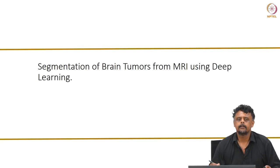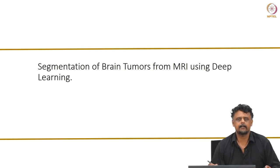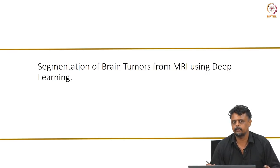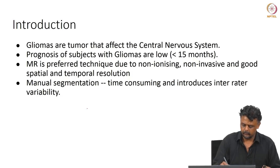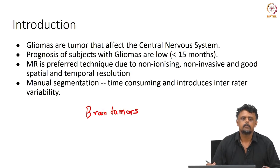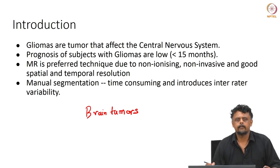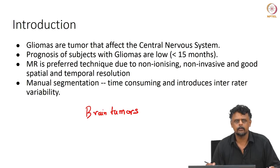Hello and welcome back. In this video we will look at segmentation of brain tumours from magnetic resonance images using deep learning techniques, especially CNNs that we have seen so far. Brain tumours, or gliomas as we typically refer to them, affect the central nervous system and are a serious form of cancer with very poor prognosis — survival is less than 2 years.